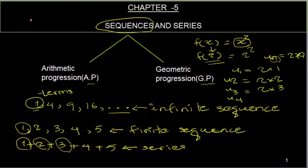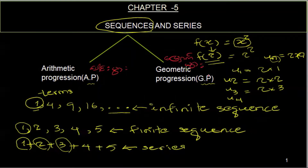The sequence of the sequence is 2. Here's the progression. And then the geometric progression. When that progression is done, next we will be able to read the progression. We will see the arithmetic progression.